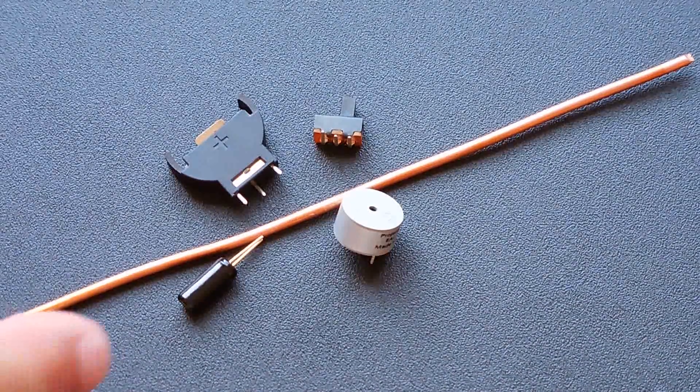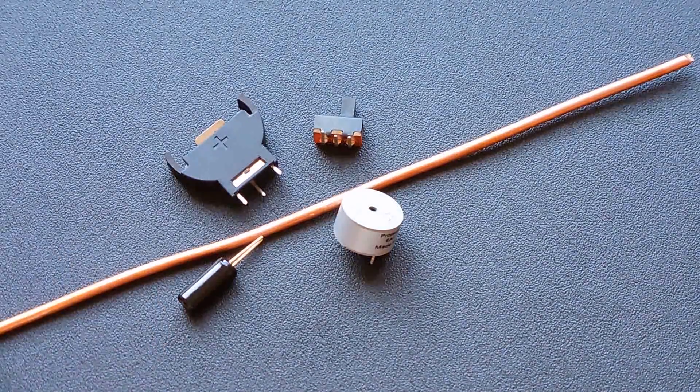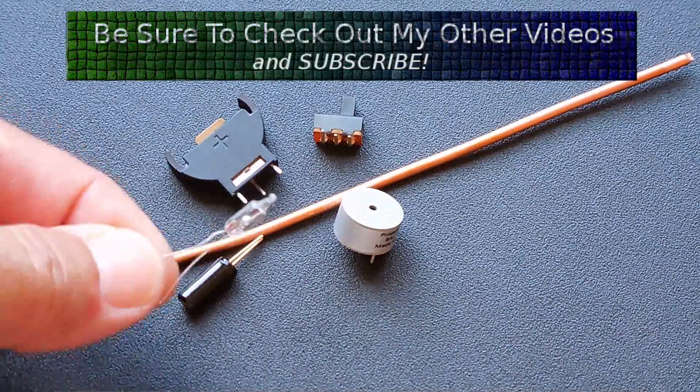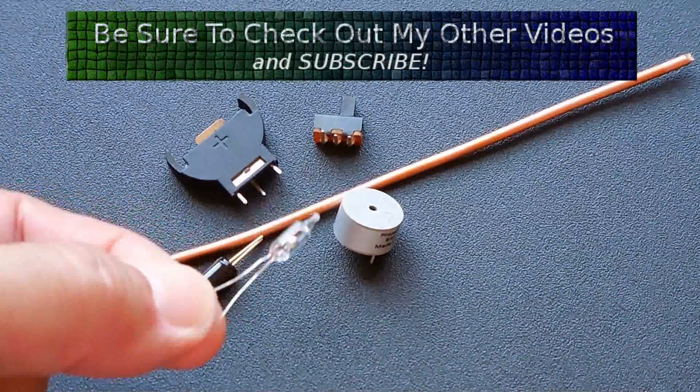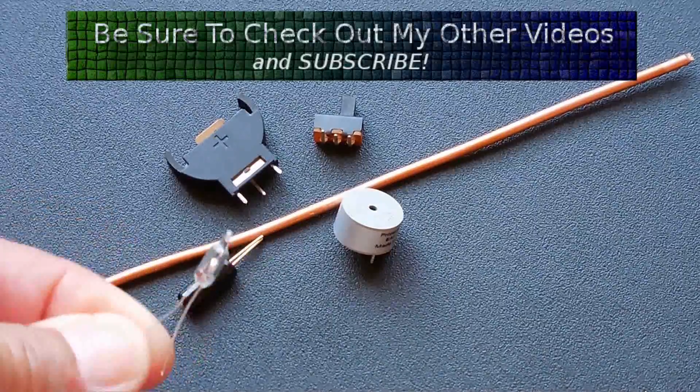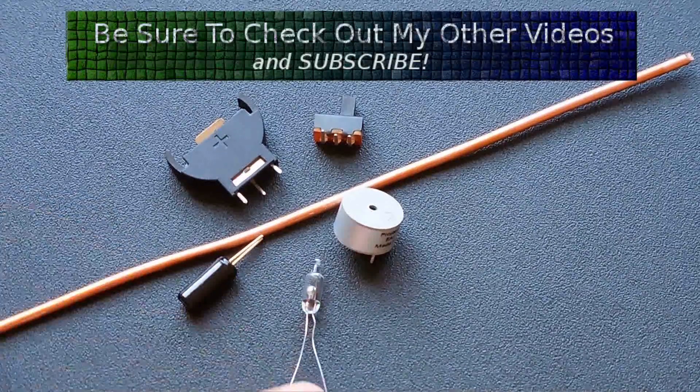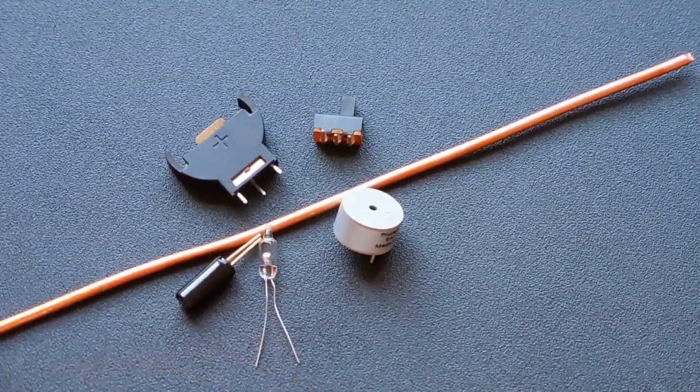The problem with the tilt switch is the level of sensitivity is not as good as one of these very tiny mercury switches. So you're definitely going to want to use one of these very inexpensive mercury switches.